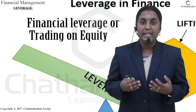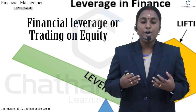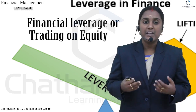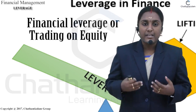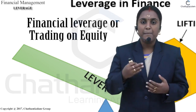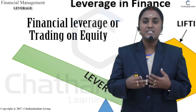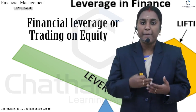The financial leverage formula is EBIT divided by EBT. The degree of financial leverage measures the impact of changes in EBIT on earnings available to equity shareholders.